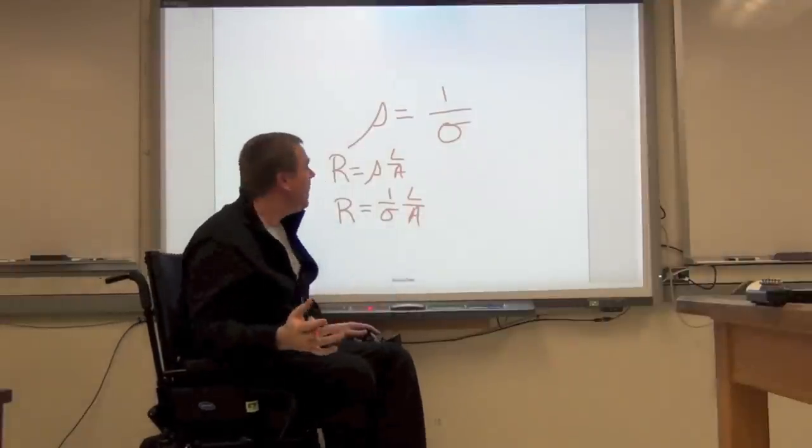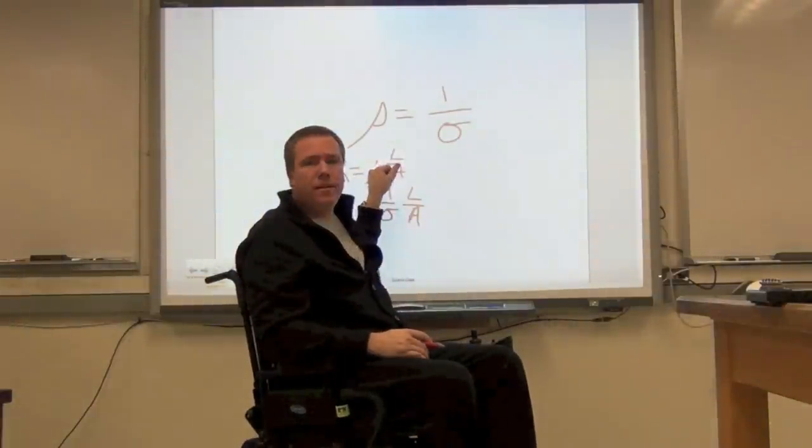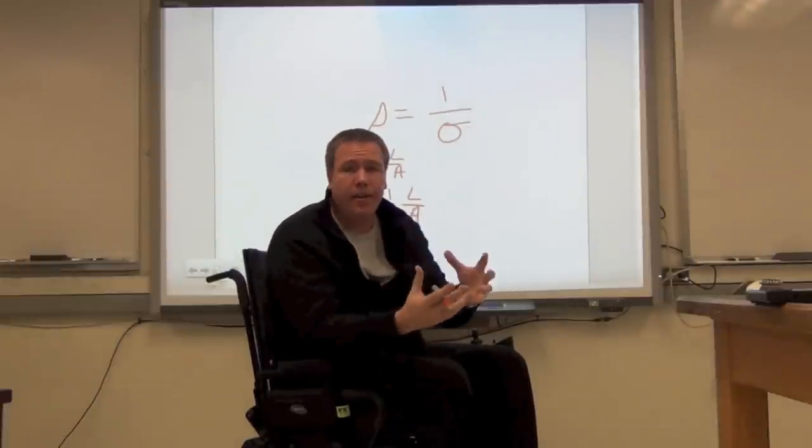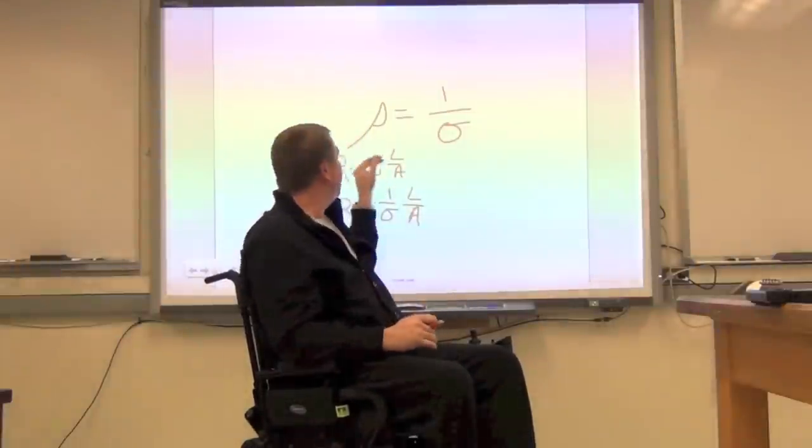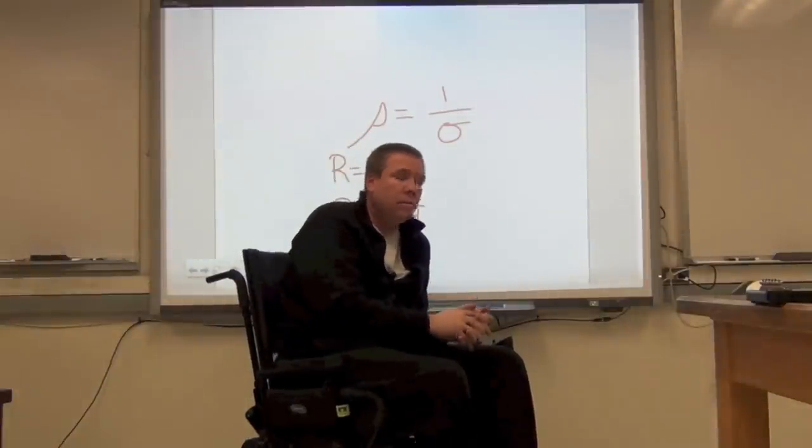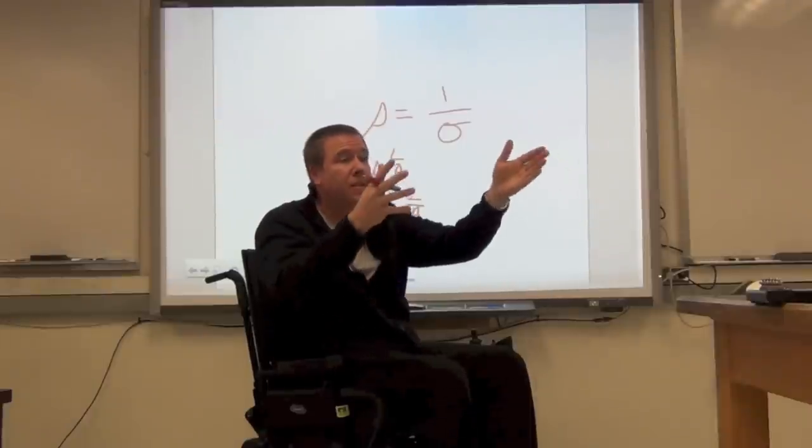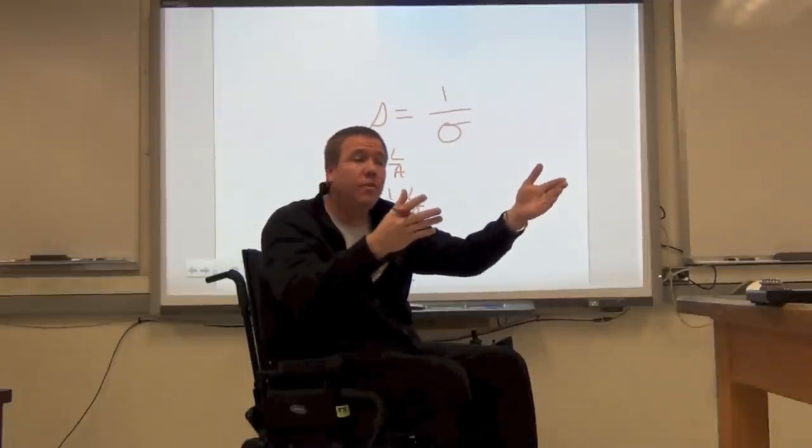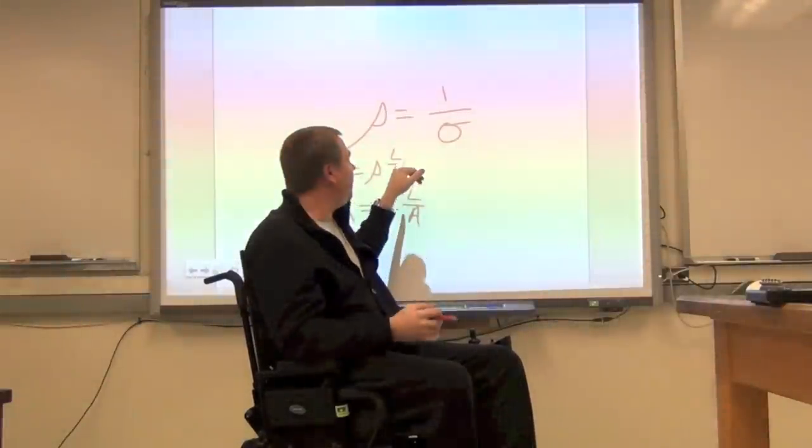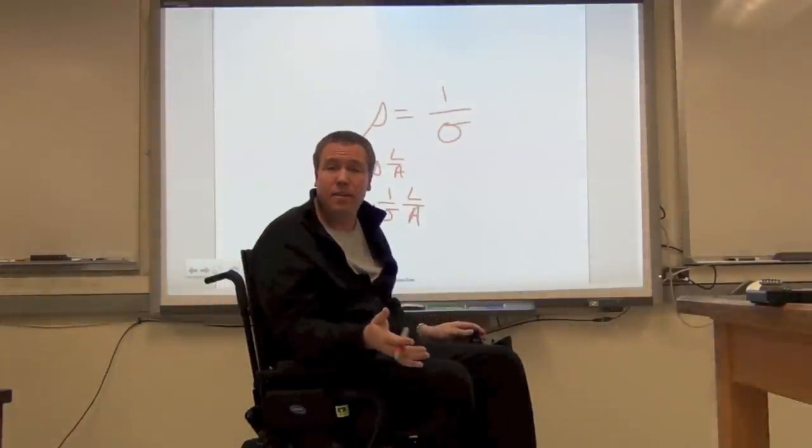So conductivity and resistivity are inverse of one another. So we could rewrite this relationship. We could say that R is equal to rho times L over A, or we could say that R is equal to 1 over sigma times L over A. In other words, if you had a value for rho or for sigma, the conductivity, if you knew the resistivity, and you knew the length, and if you knew the cross-sectional area, you could actually calculate the resistance in the wire. Would that be important? Well, I think so. You might want to know when you're building something how much resistance there's going to be in this system.